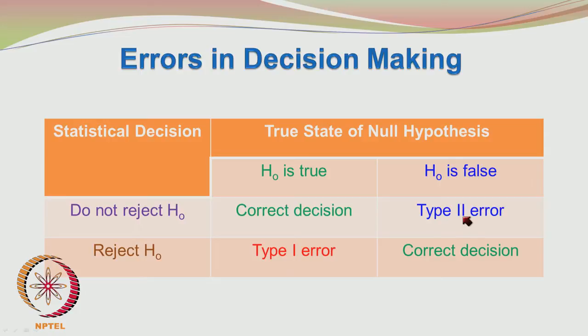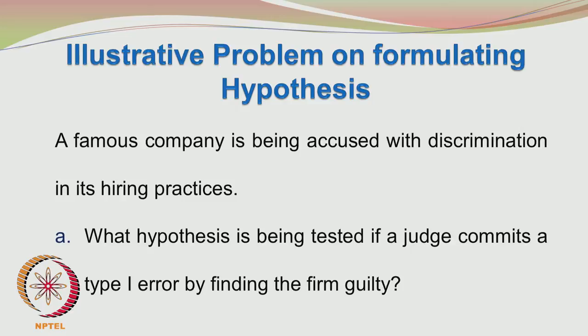So we have Type 1 error and Type 2 error depending on whether you rejected H0 or did not reject H0. A famous company is being accused of being discriminatory in hiring. If a judge commits a Type 1 error by finding the firm guilty, that means he has rejected the null hypothesis. The null hypothesis in that case would have been: the company is fair in its hiring practices.